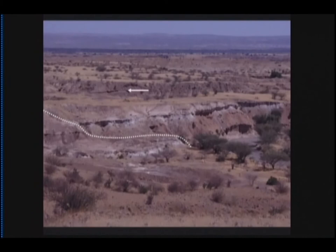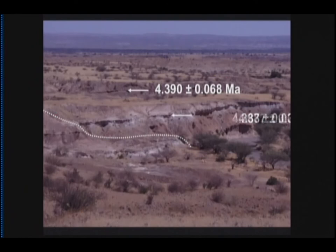And almost all of the Ardipithecus ramidus that is known comes from the stratigraphic interval between this tuff and this tuff. So this is only about five meters. And something like 95% of all the Ardipithecus ramidus fossils that have ever been found come from this stratigraphic interval, over a wide area, mind you, of several tens of kilometers in area, but always in the same stratigraphic horizon.